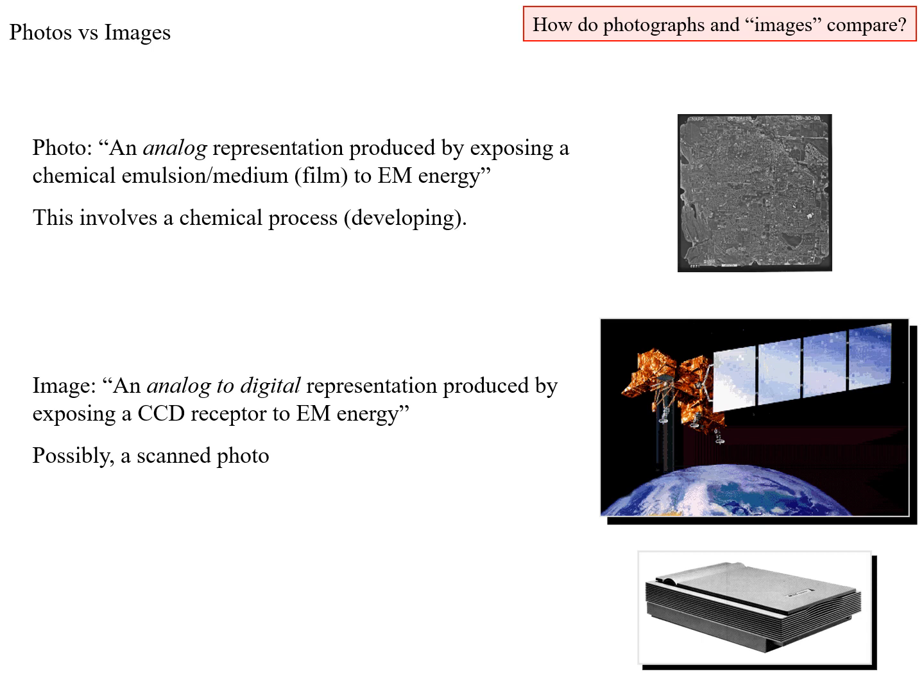We make a distinction between photos and images. A photo is an analog representation produced by exposing a chemical emulsion or medium — the film — to electromagnetic energy. This is a chemical process used to develop those photos, so a photo is limited to a paper or film product. An image is a digital or analog-to-digital representation produced by exposing some kind of sensor to electromagnetic energy, and this could also be a scanned photo — after the photo is scanned, we would call that an image as well.